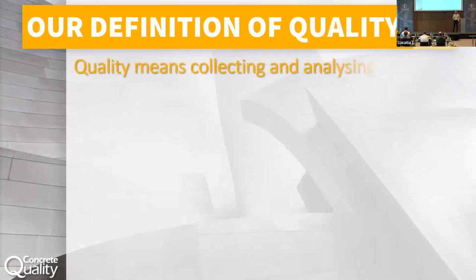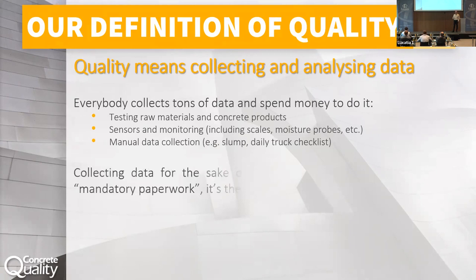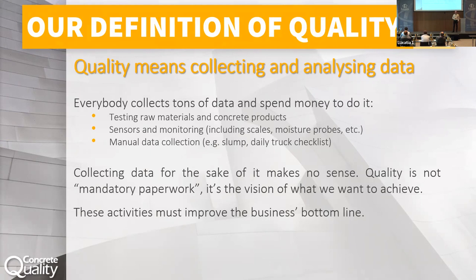What quality means for us is collecting and analyzing the data — both. Everybody collects tons of data. You have data when you produce: testing on raw materials, testing from suppliers, cement mill certificates, aggregate testing. You have sensors already — every plant has sensors. A weight scale is a sensor, a GPS in the truck is a sensor. There's also manual data collection — you make a slump test and somebody writes it down. Collecting data just because you have to, because it's mandatory, makes very little sense.